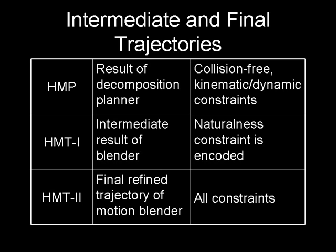The second stage, HMT1, is an intermediate result in which the planned motion is blended with natural-looking motion. The final stage, HMT2, replans using the results from the second stage to produce natural-looking motion for which all constraints are satisfied.